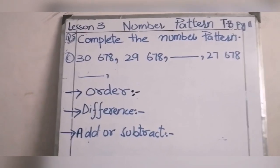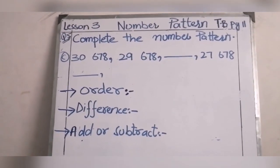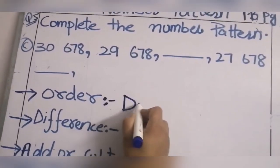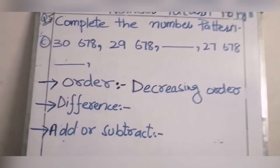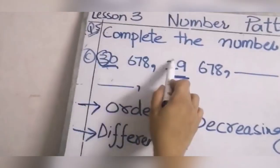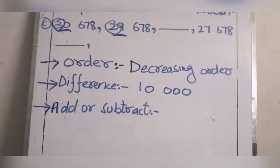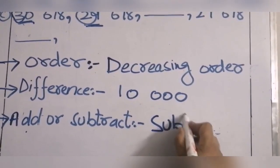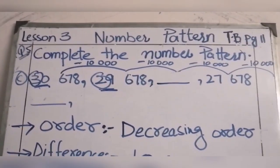Here we have another example: 30,678 and 29,678. Reading the numbers carefully, 30 then 29 — this is decreasing order. The difference occurs at the ten-thousands place: 30,000 and 29,000. Since the number is decreasing, we subtract 10,000 from each number.